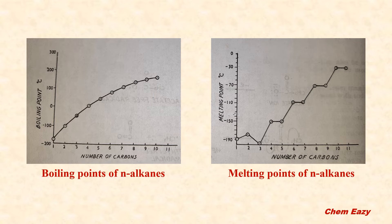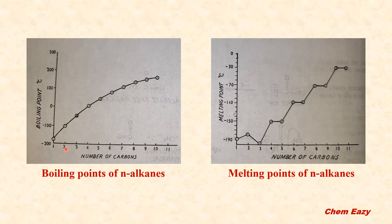Look at this graph. This is the graph for boiling point of N-alkanes. Here, the x-axis shows number of carbons and the y-axis shows boiling point given in degree Celsius. So, by increasing the number of carbons from 1 to 2, the boiling point increases. Again from 2 to 3, carbon again increases. Like that, while increasing the number of carbons, the boiling point increases smoothly.